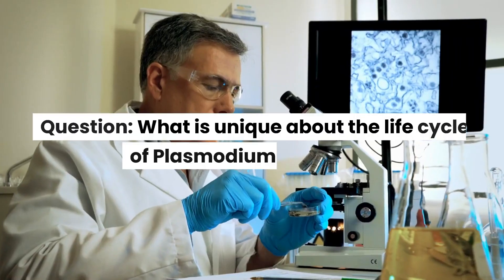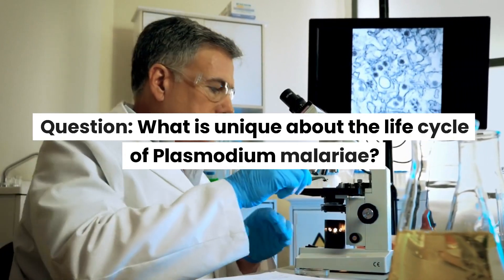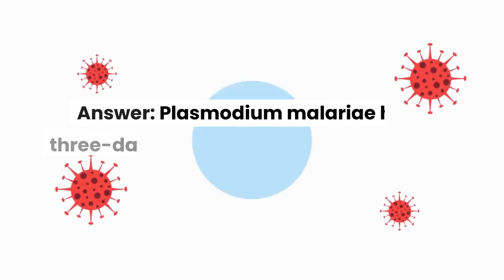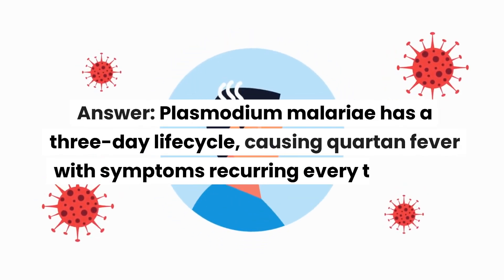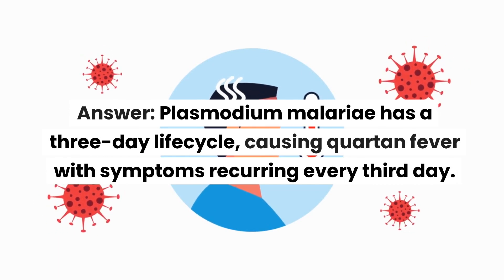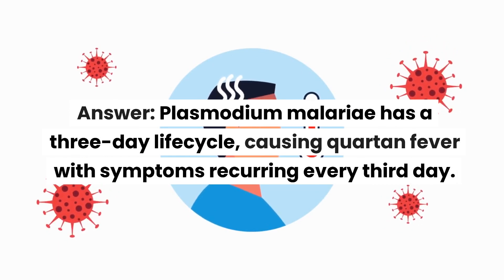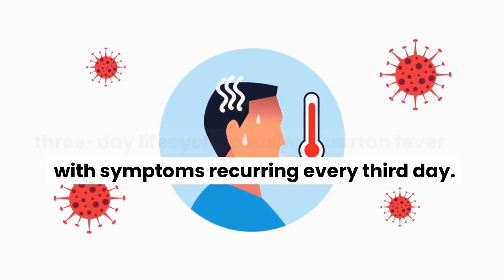Question: what is unique about the life cycle of Plasmodium malariae? Answer: Plasmodium malariae has a three-day life cycle, causing quartan fever with symptoms recurring every third day.